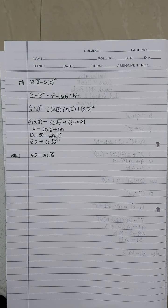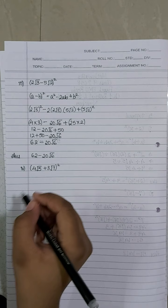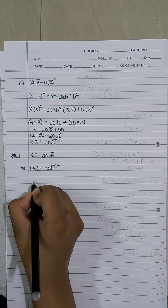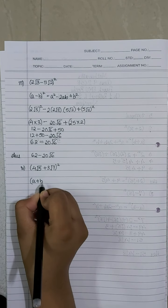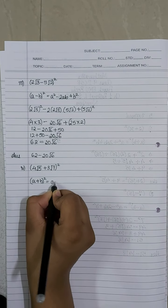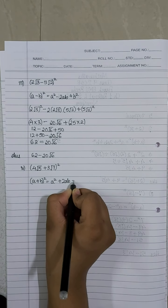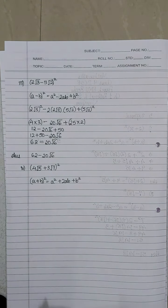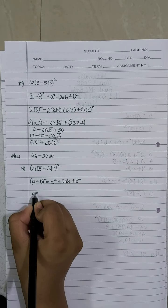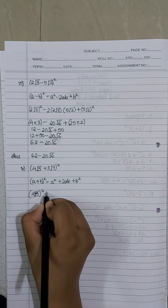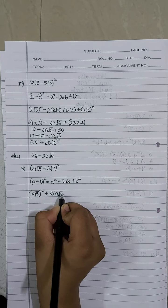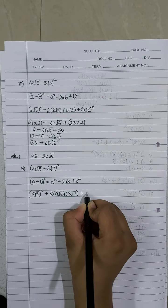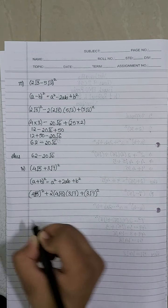Moving on to the fourth sub-question: 4 root 5 plus 3 root 7 the whole square. The identity here will be a plus b the whole square, which equals a squared plus 2ab plus b squared. Here, 4 root 5 is the a and 3 root 7 is the b. We write it as 4 root 5 the whole square, plus 2 into 4 root 5 into 3 root 7, plus 3 root 7 the whole square.